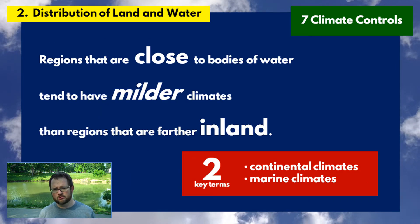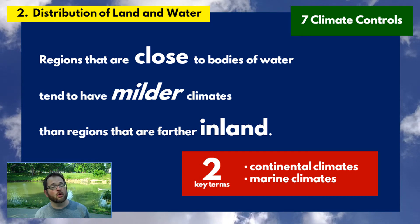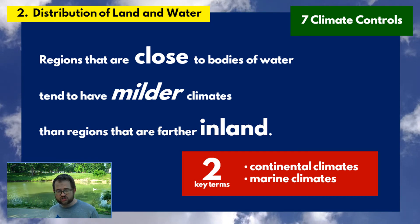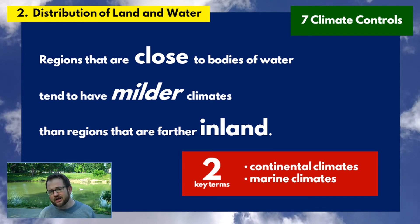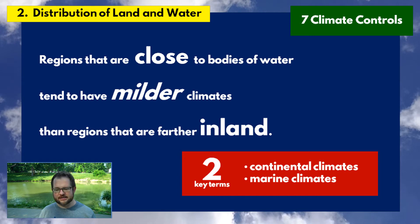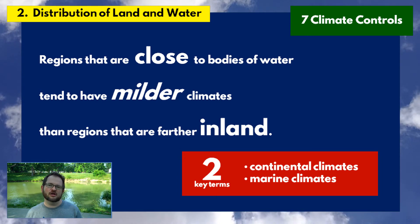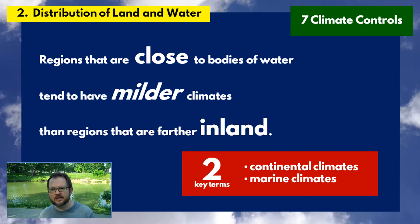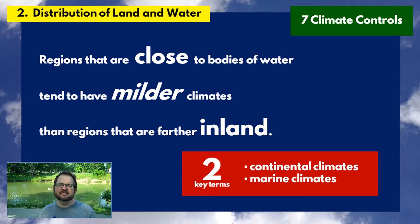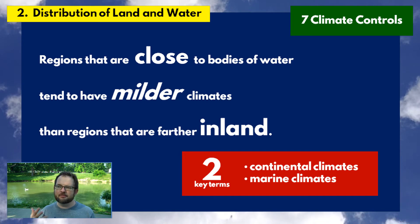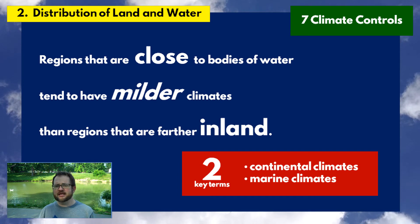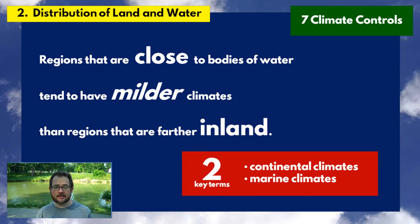Our second climate control is the distribution of land and water — basically, how close a location is to a major body of water. Regions close to major bodies of water like oceans tend to have milder climates than places far inland. Two key vocabulary terms here: continental climate and marine climate. Places far inland tend to have more continental climates, with bigger differences between summer and winter — colder winters and hotter summers than a place at a similar latitude on the shore.